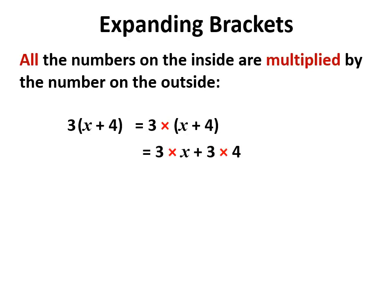We take the 3, multiply it by the x, and multiply it by the 4. If there's no symbol there, it's a multiplication, and the brackets means it applies to all of it.